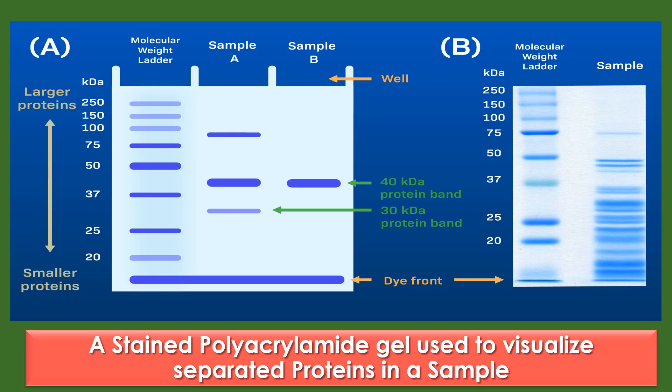This figure shows a stained polyacrylamide gel used to visualize separated proteins. Panel A shows an image representation of Coomassie stain SDS-PAGE data. The wells and dye front are labeled; large proteins are found towards the top of the gel and small proteins towards the bottom. Lane 1 has a molecular weight ladder, and lanes 2 and 3 are samples from two separate attempts at purifying a 40 kDa protein — the sample in lane 3 is more pure than lane 2. Panel B shows a portion of a real gel used to analyze proteins in a purified sample of eukaryotic ribosomes, which consist of 80 proteins, explaining the large number of bands.